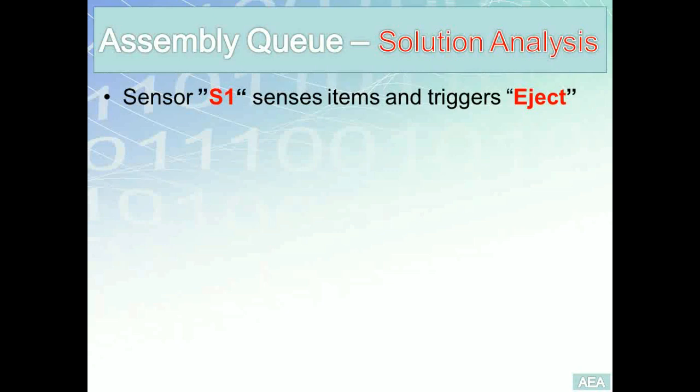Instead of having a start button and a motor output, we have sensor S1, which is normally-open — normally zero. When it senses an item, it will close, read one, and the eject will go either off or on.